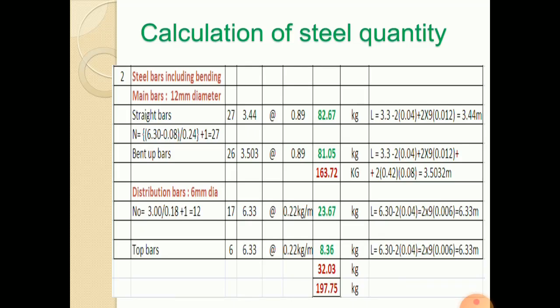If you calculate number of straight bars, it will be 6.3 is the total span minus two side covers, that is 40 mm, 40 mm. That is, 6.3 minus 0.08 divided by spacing of each bar. Each straight bar will be 24 cm spacing, because spacing is 12 cm, alternate bars means it will be divided by 24, plus 1, it will be 27. Total number of bars will be 27.